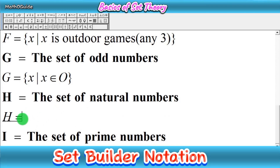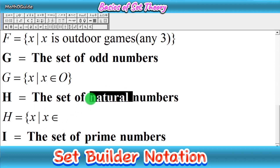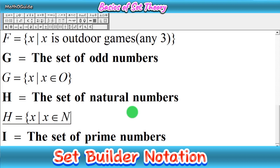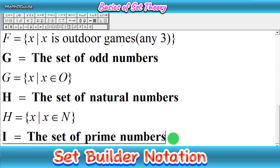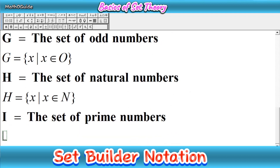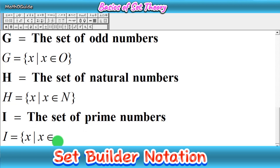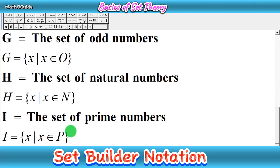Then we have set H, which is equal to the set of natural numbers. Copy the same: X such that X belongs to natural numbers, written as capital N. There are no limits here, so simply close the bracket — very easy. At last, set I is equal to the set of prime numbers. Write the same first portion: X such that X belongs to the set of prime numbers, noted by capital P. There is no range here, so close the bracket.